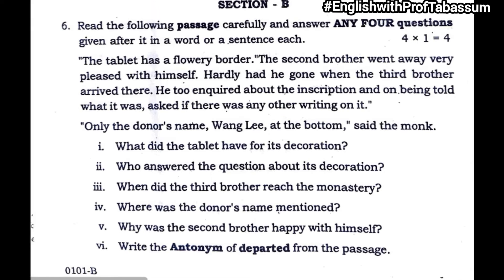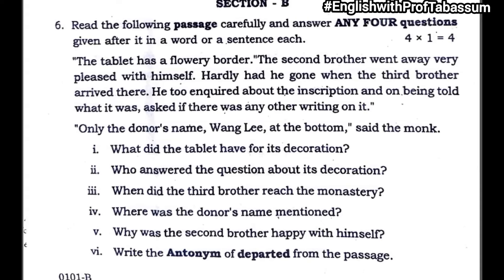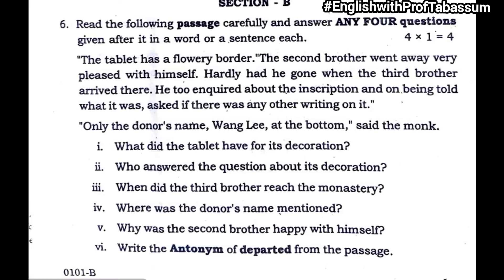Q4: Where was the donor's name mentioned? — At the bottom. Q5: Why was the second brother happy with himself? — Thinking that he was the only one who knew what was written on the tablet. Q6: Write the antonym of 'departed' from the passage. The antonym of departed means its opposite — the answer is 'arrived,' given in the second last line. This was a seen passage taken from your short story.